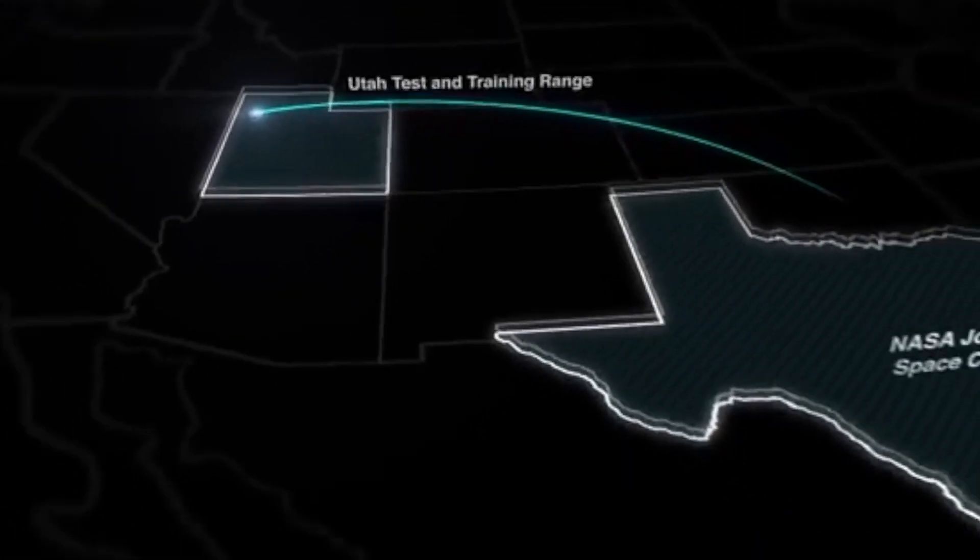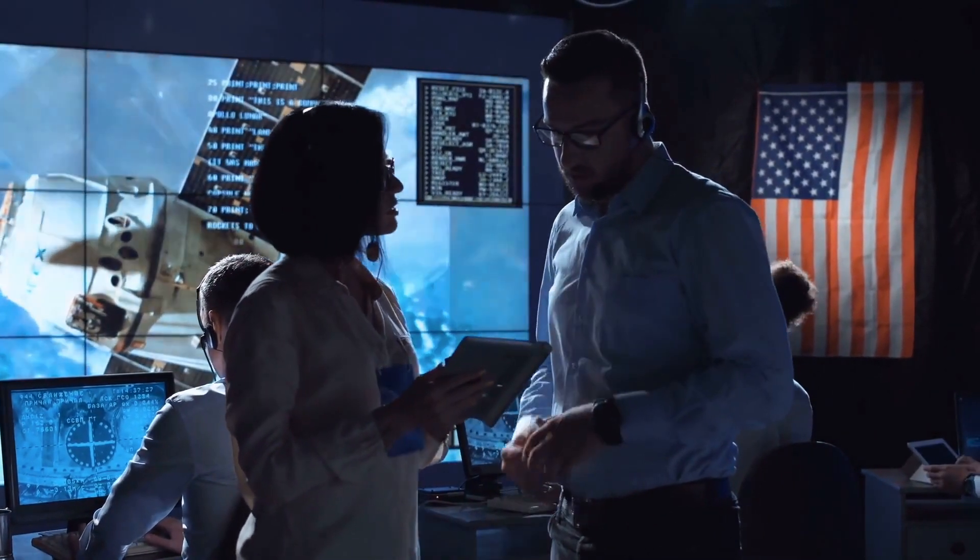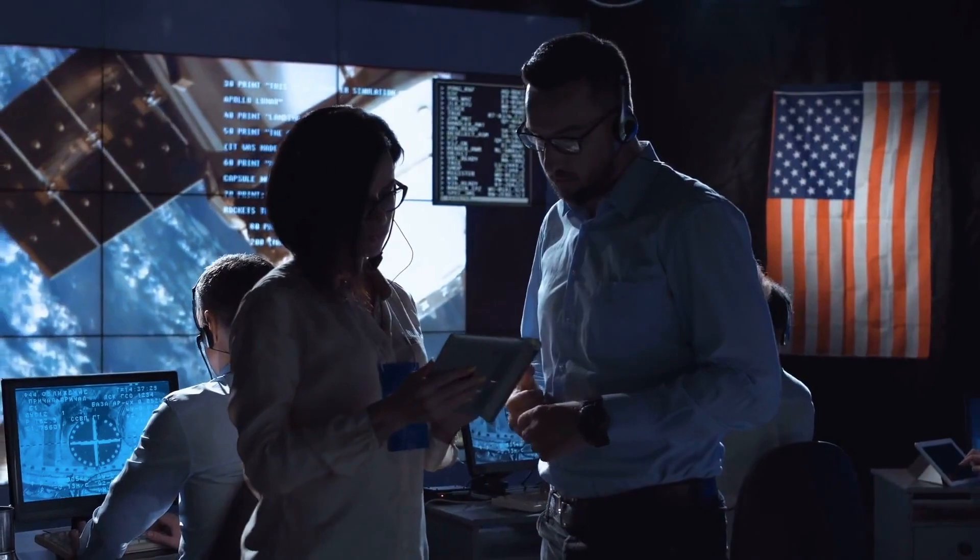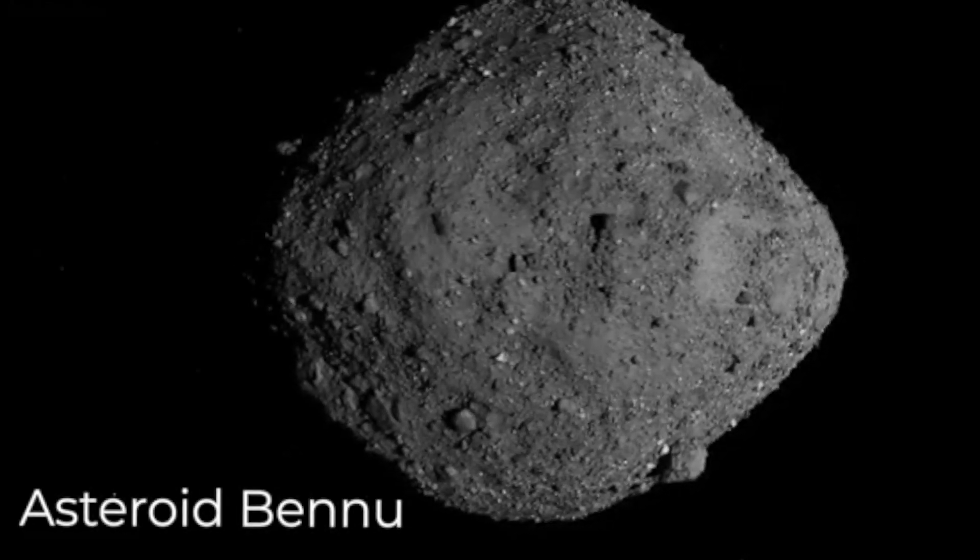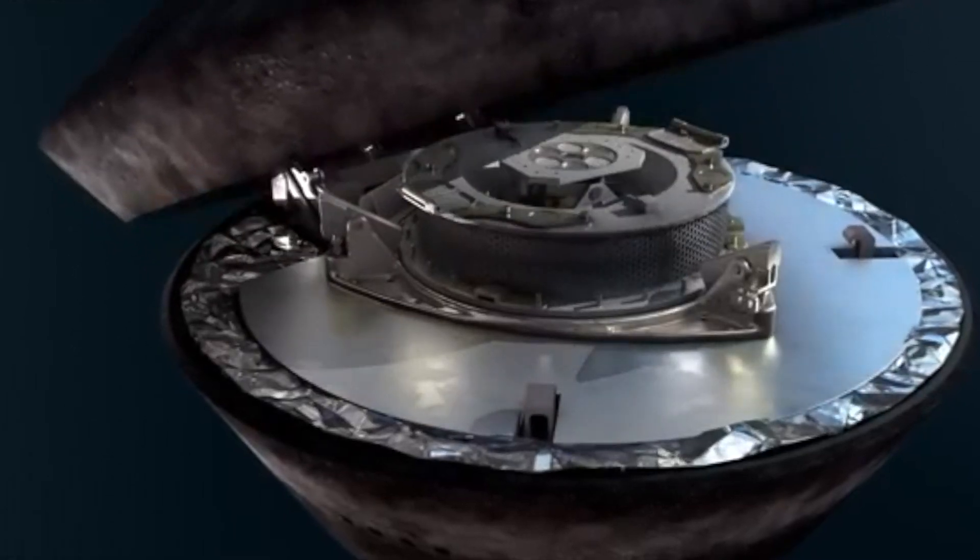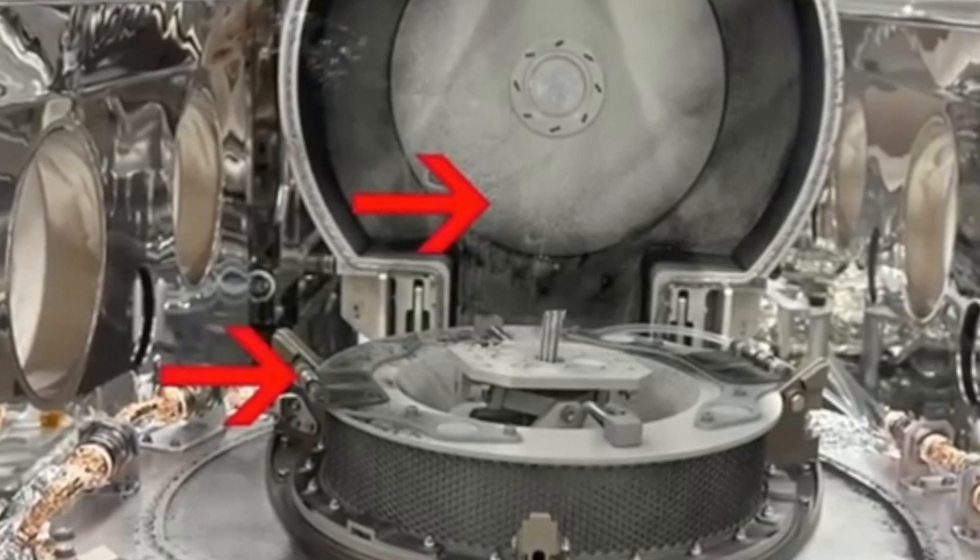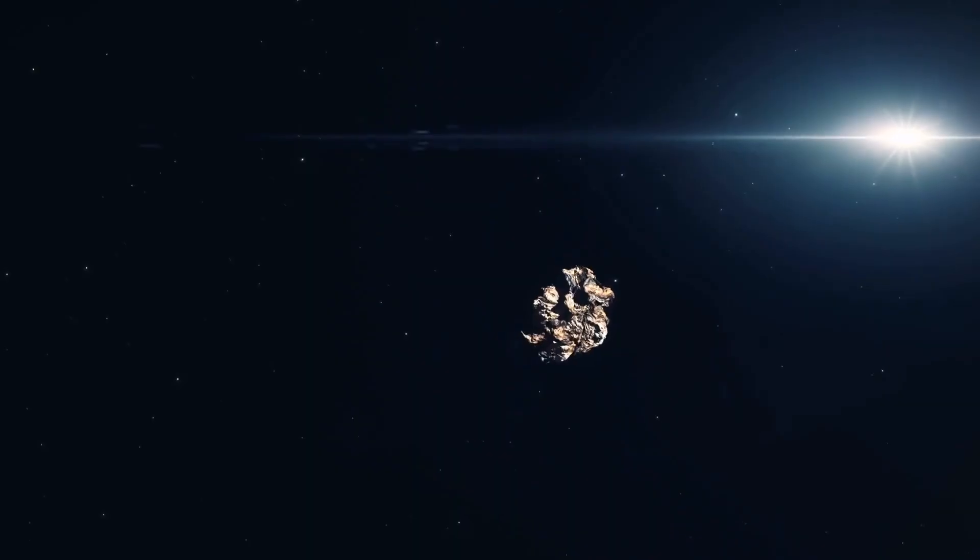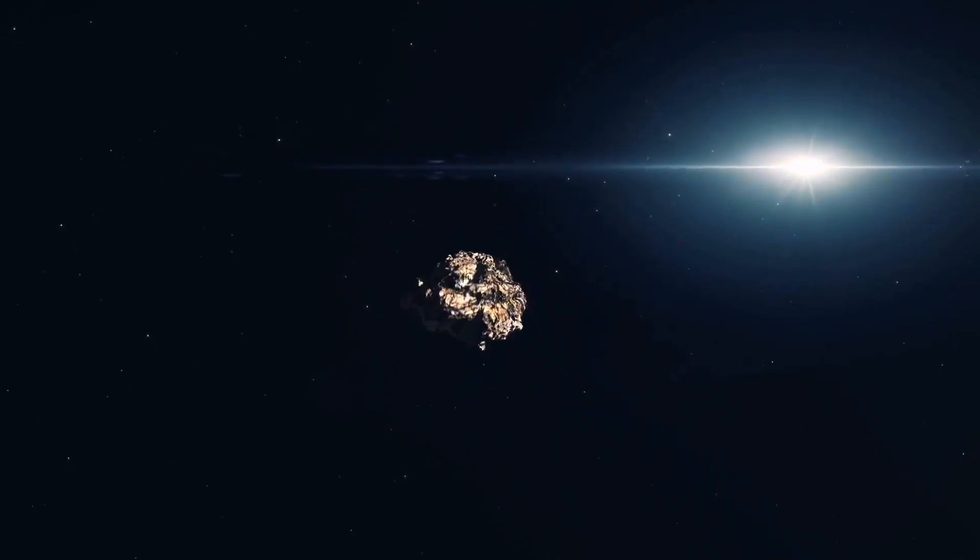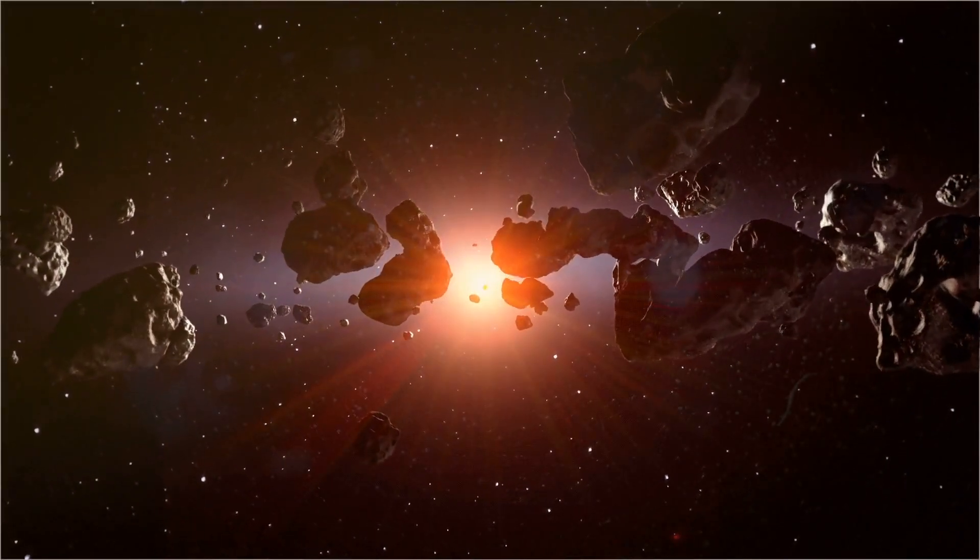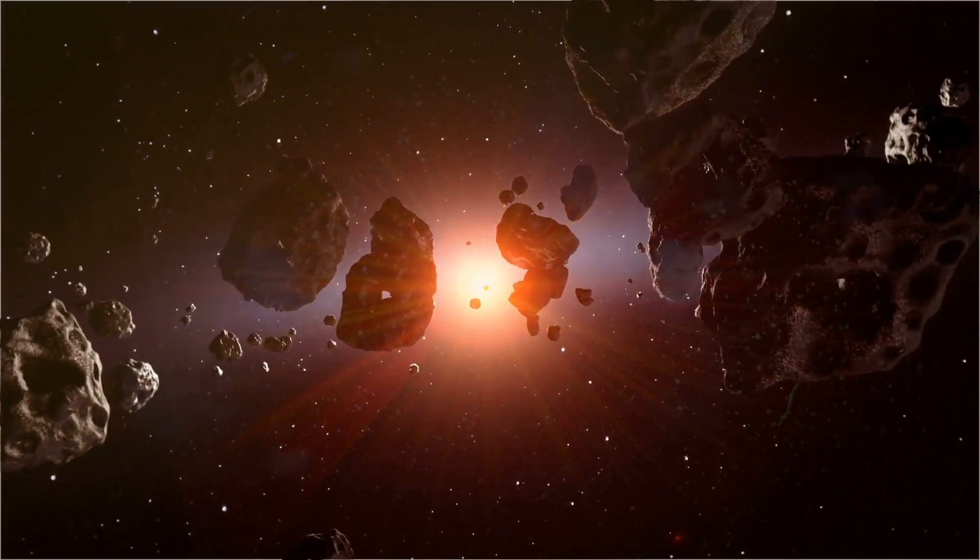Upon opening the sample return canister at NASA's Johnson Space Center in Houston, scientists were met with a sight that both surprised and excited them. The avionics deck of the canister was covered in a layer of dark powder and sand-sized particles, believed to belong to Bennu. This dust not only coated the interior of the canister, but also extended to its exterior, including the avionics deck housing crucial electronics. The dust had escaped through tiny openings between the lid and the body of the canister, raising questions about its origin.